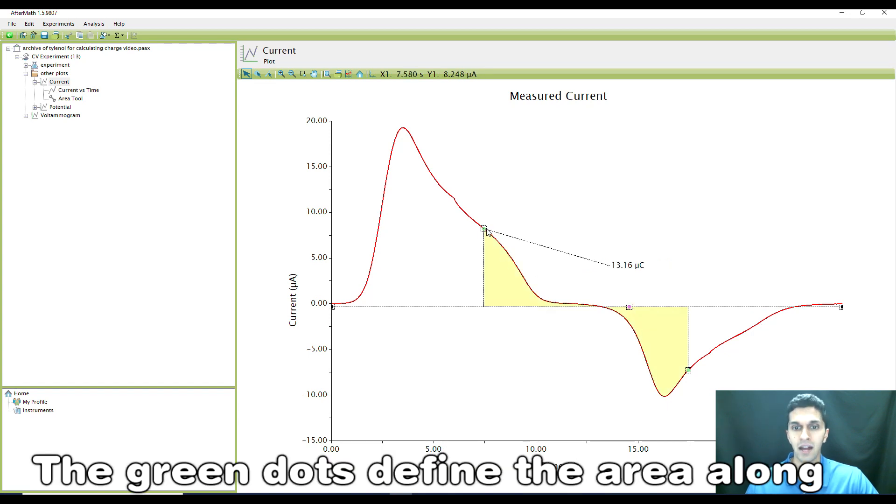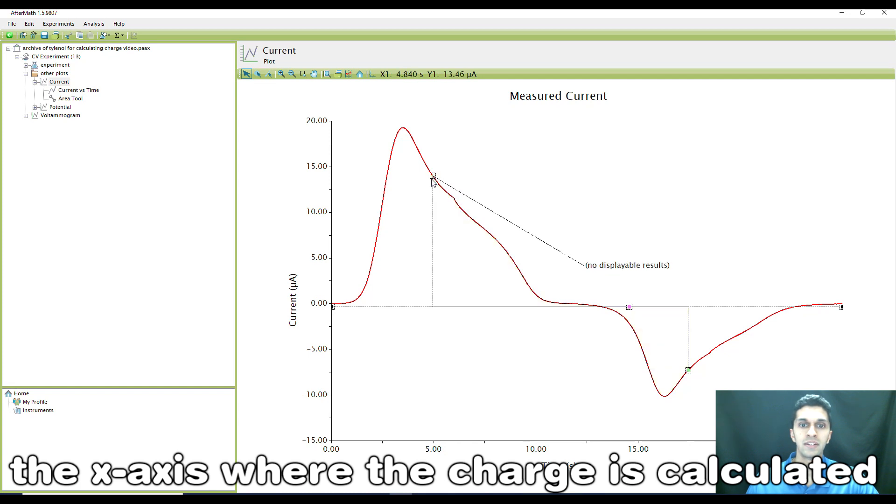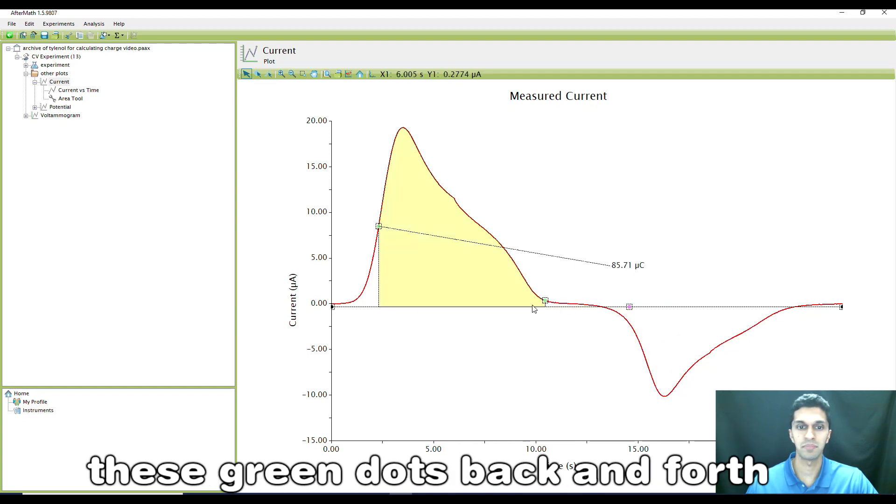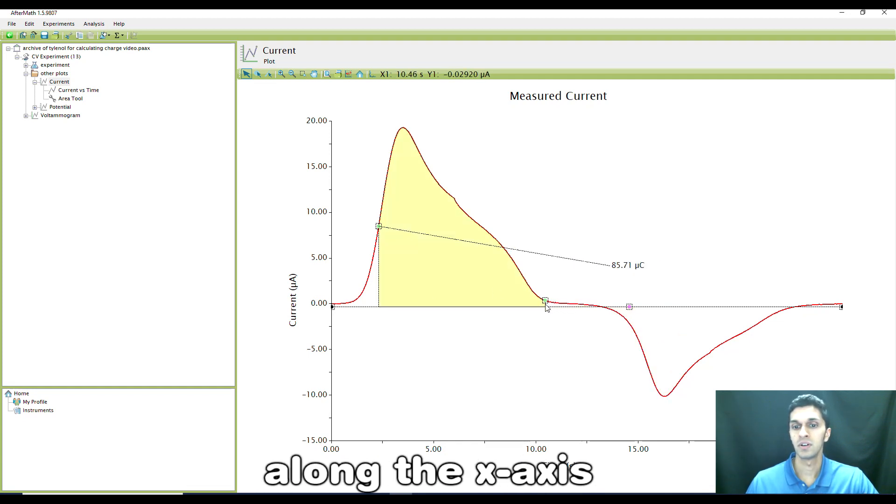The green dots define the area along the x-axis where the charge is calculated. I can move these green dots back and forth along the x-axis.